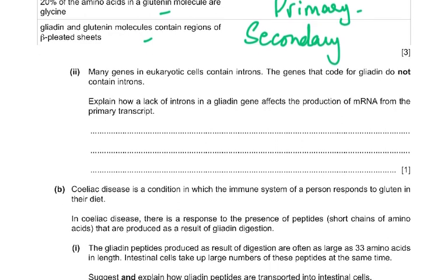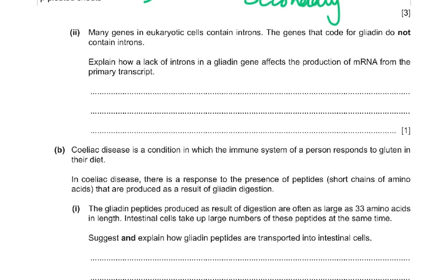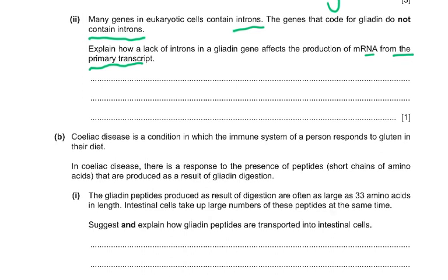Then we come to part 2 of the question. Many genes in eukaryotic cells contain introns. The genes that code for Glyadin do not contain introns. Explain how a lack of introns in a Glyadin gene affects the RNA from the primary transcript. If it doesn't contain any introns, RNA splicing is not needed. The primary transcript is a coding sequence — we get the pre-mRNA then the mRNA.